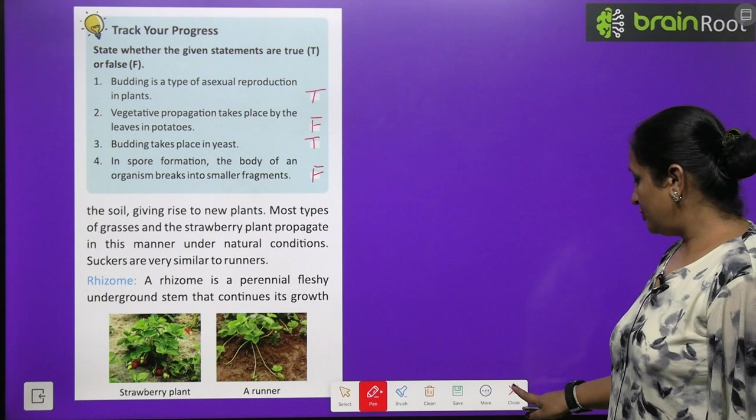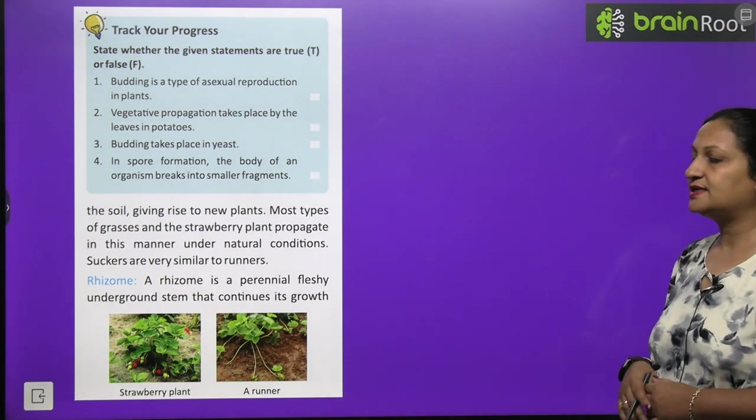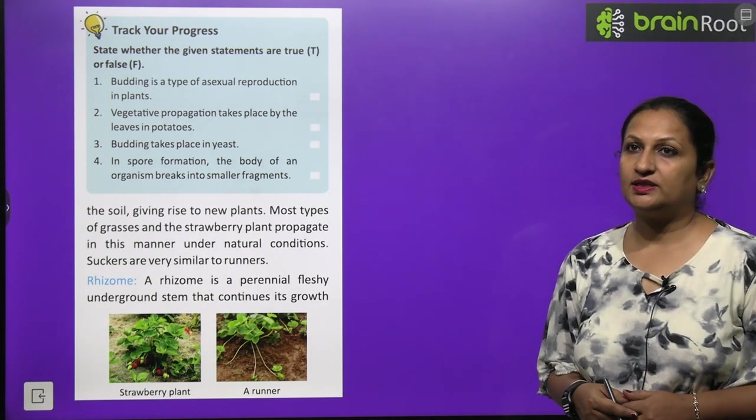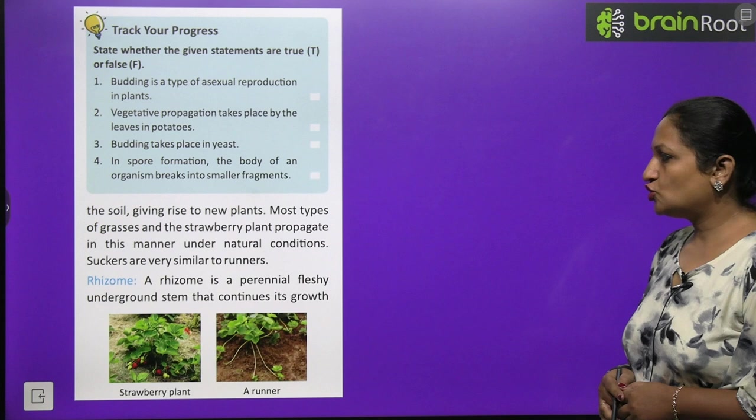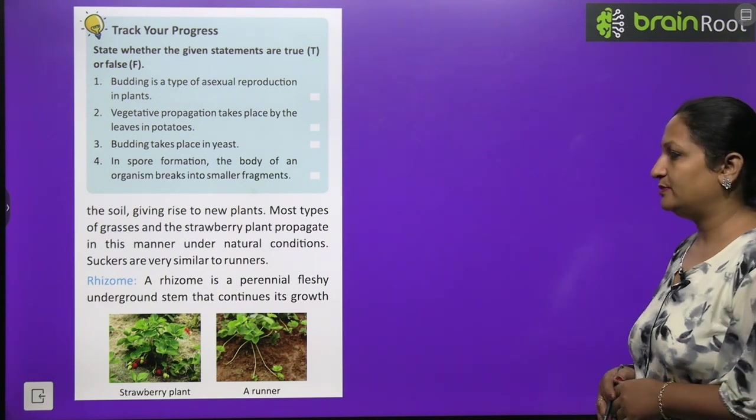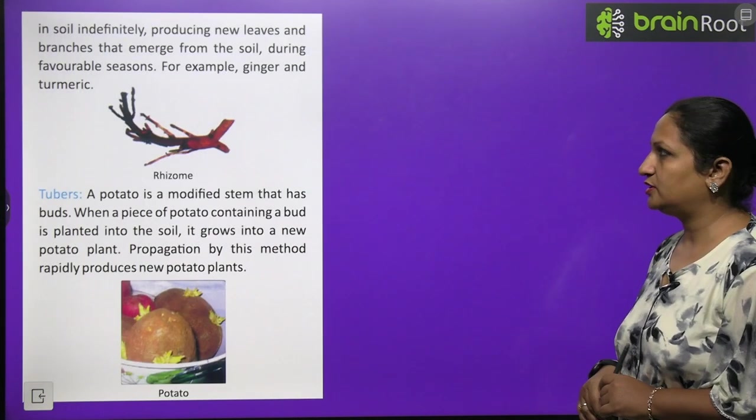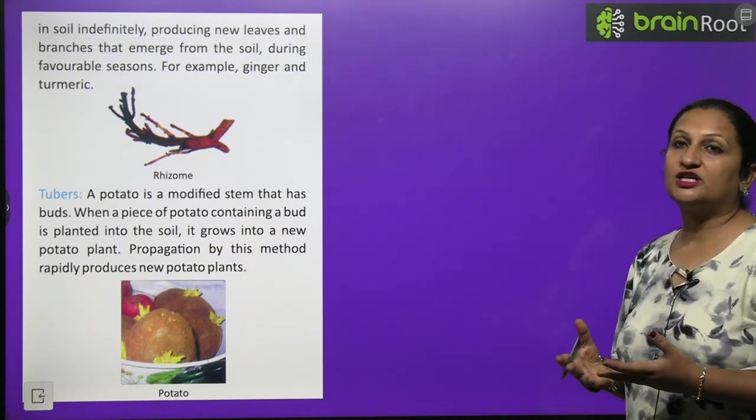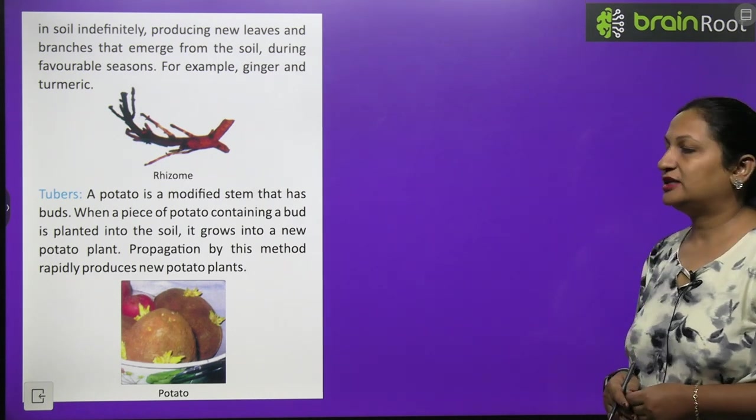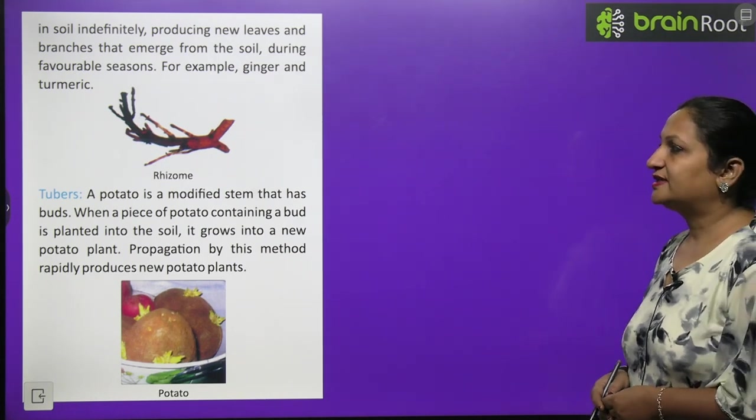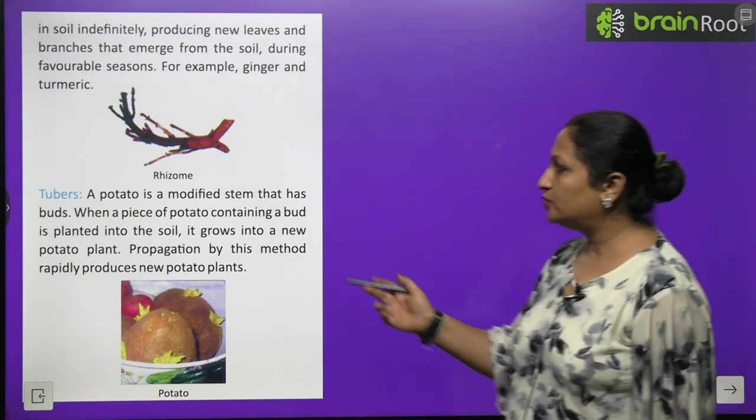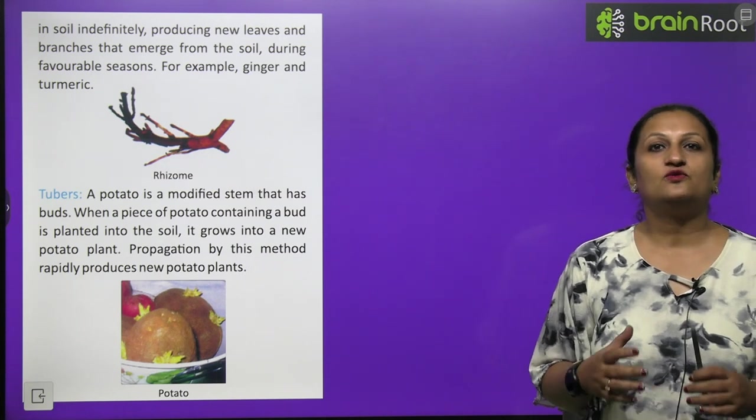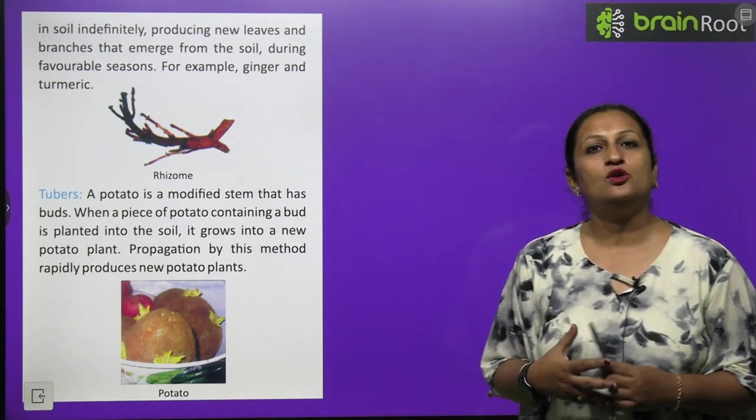Now other type of vegetative propagation is rhizome. Rhizome means like you see ginger's growth, turmeric grows - they are actually the rhizomes. Rhizome is a perennial fleshy underground stem that continues its growth in soil indefinitely producing new leaves and branches which emerge from the soil during favorable conditions, like ginger and turmeric. Then we have tubers. We have already discussed that potato's bud, if you transplant it in soil, then new plant development happens there.